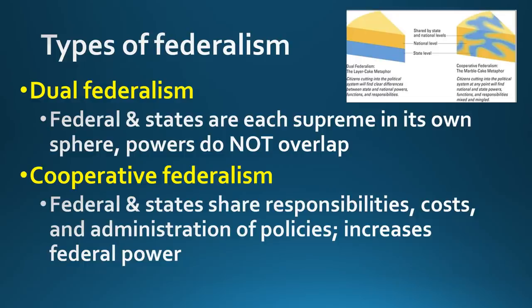With federalism, we have both dual and cooperative. In dual federalism, the states and the federal government each mind their own business — they have their own jobs, handle those jobs, and don't overlap. This is called layer cake federalism: a layer of vanilla, a layer of chocolate, and they don't mix. We don't have dual federalism anymore. We have cooperative federalism — like a marble cake — where the responsibilities are blurred. They both share the responsibilities, share the costs, and both have a role in administering them.